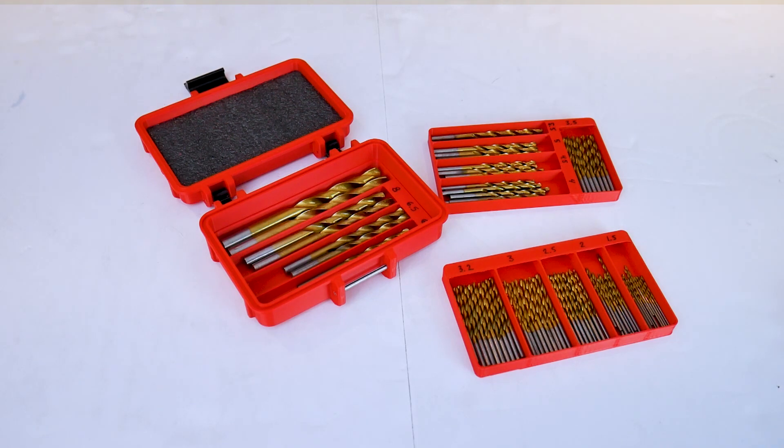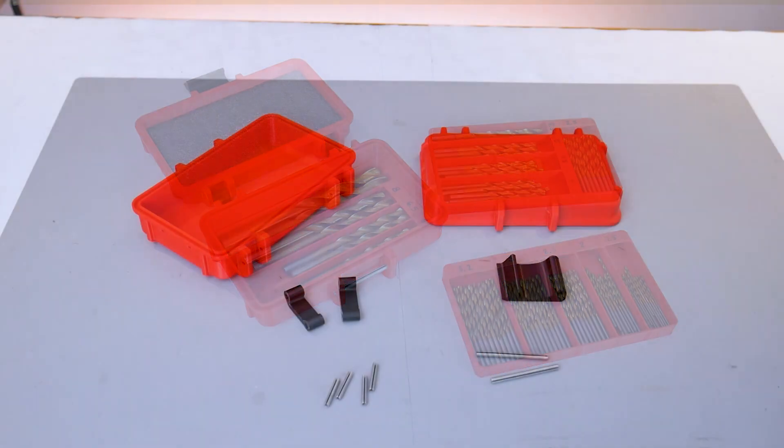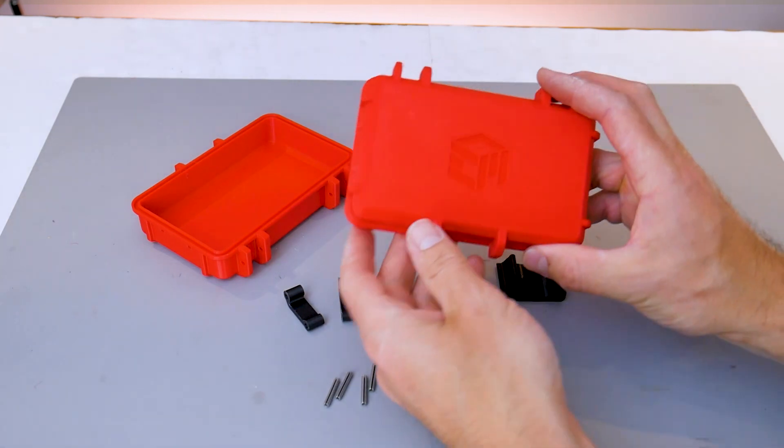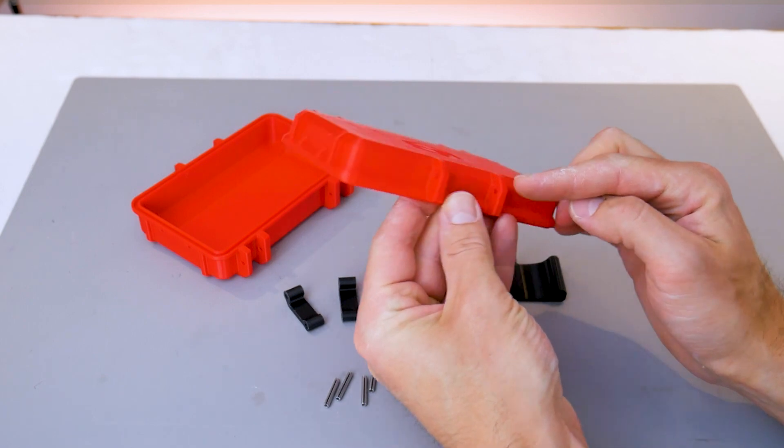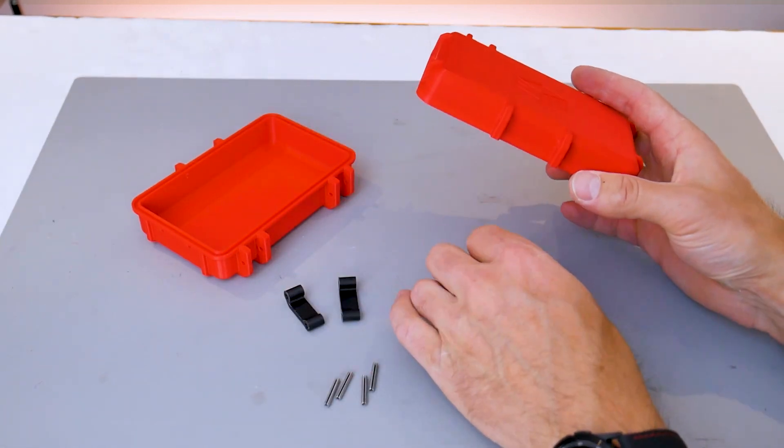If you guys like what you see, follow those links, print your parts, come on back and follow along with this video. What you're looking at here is the outer shell of the case, the latches, and the hardware that you'll need. All the parts were printed in regular PLA plus, so nothing too exotic.